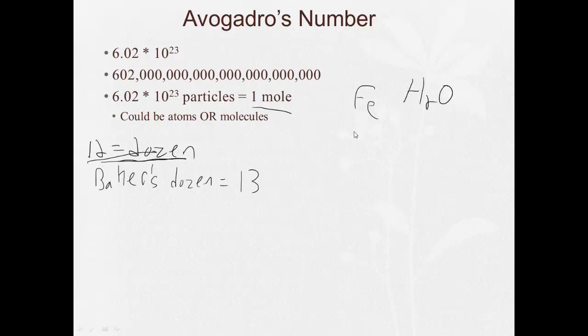So in chemistry, the mole is the chemist's dozen. But instead of being a small manageable number like 12 or 13, the chemist's dozen - the mole - is dealing with 6.02 times 10 to the 23rd. Now, why is that important?